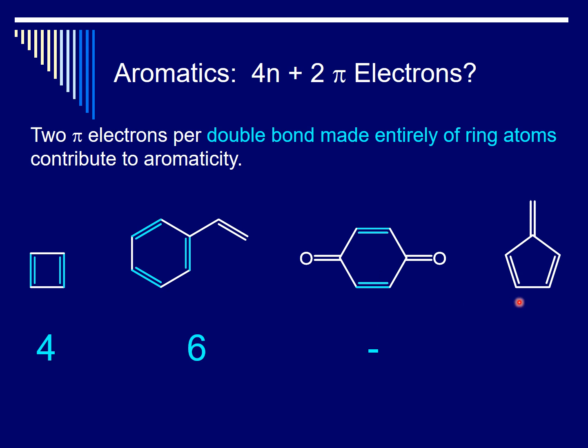We have the same non-aromatic situation with the last compound, so we don't bother counting pi electrons. Once you determine something is non-aromatic, there's no comment you can make regarding stability. For example, this compound is stable, this one is not.